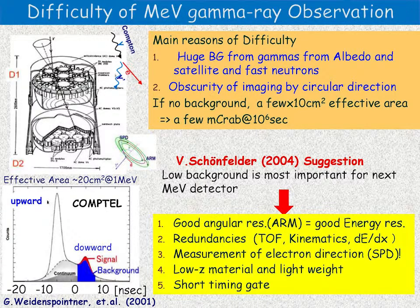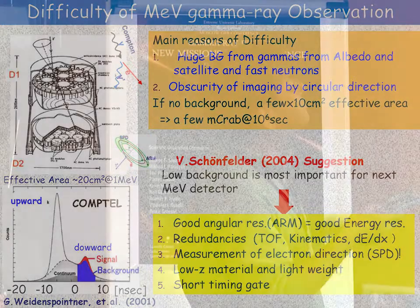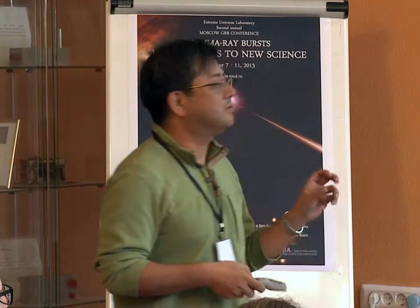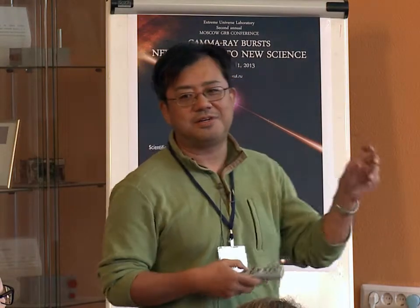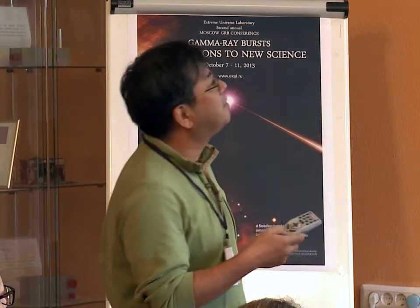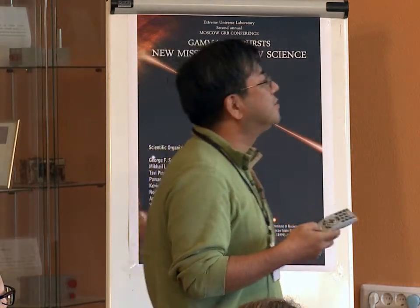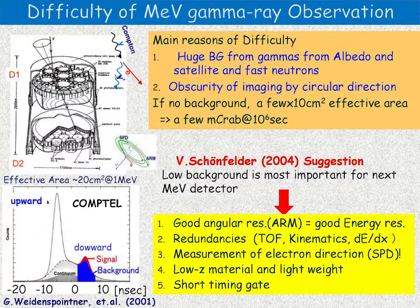Therefore, with no background rejection, the detector provides only a few times 10 square centimeters effective area, with quite good sensitivity — similar to Fermi satellite. This is considered by Professor Schoenfelder, the leader of the COMPTEL group.